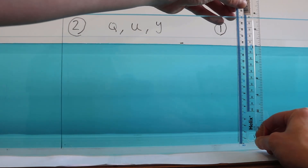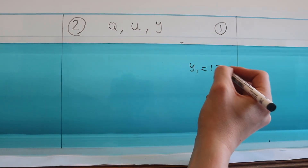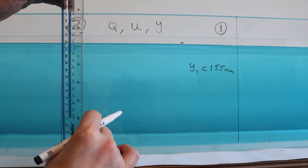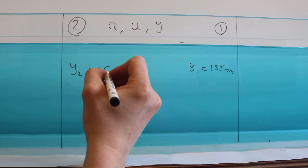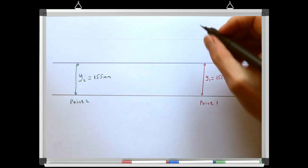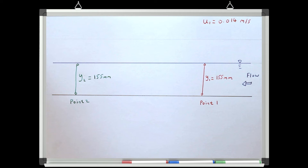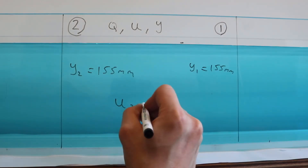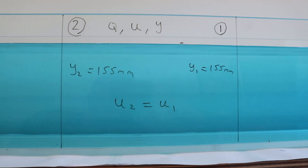Let's look at a few quick examples of this. This is an example of a steady, uniform open channel flow — the flow parameters are not changing with either distance or time. Let's say we know the velocity at point one is 0.014 metres per second and the flow depth at point one is 155 millimetres, and the depth at point two is also 155 millimetres because this is a uniform flow. Can we work out the velocity at point two? This is actually a really easy example: if the flow is uniform, the parameters are the same at point one and point two, so we know the velocity must be 0.014 metres per second at point two as well.